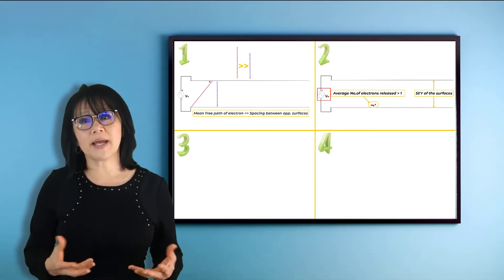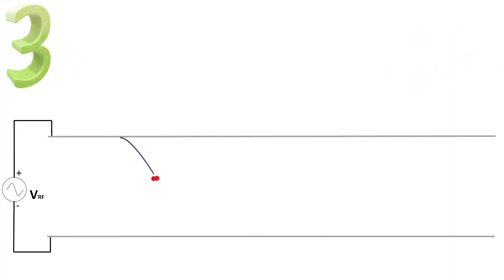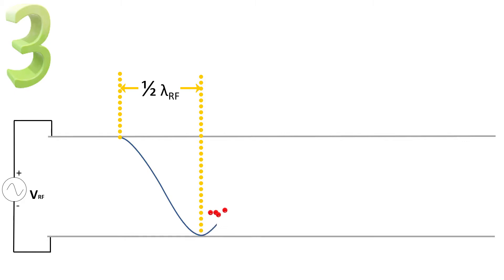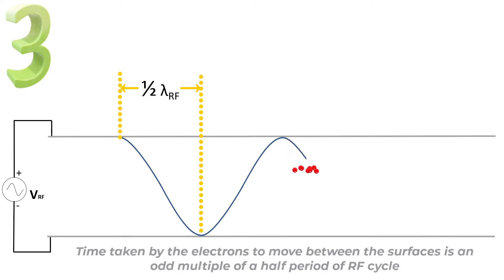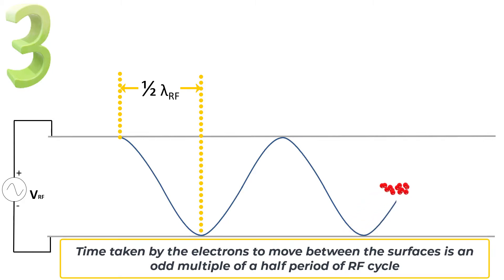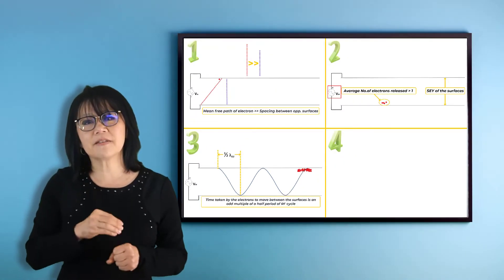When conditions one and two are met, condition three: the transit time for the electron to travel between the surfaces it's released from and which it impacts is an integer number of half RF wavelengths — it's resonating. At a very specific situation, the time the electron takes to move from surface to surface is an odd multiple of half periods of the RF cycle. Very, very specific. Then, and only then, can the number of electrons bouncing back and forth multiply. It's synchronized with the applied RF field — a very specific condition that makes the avalanche effect occur.